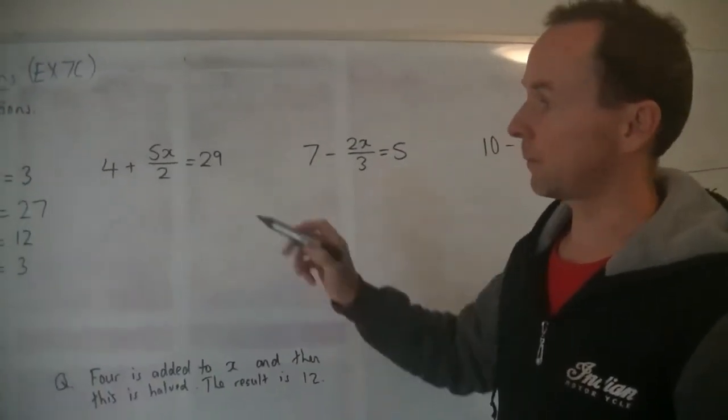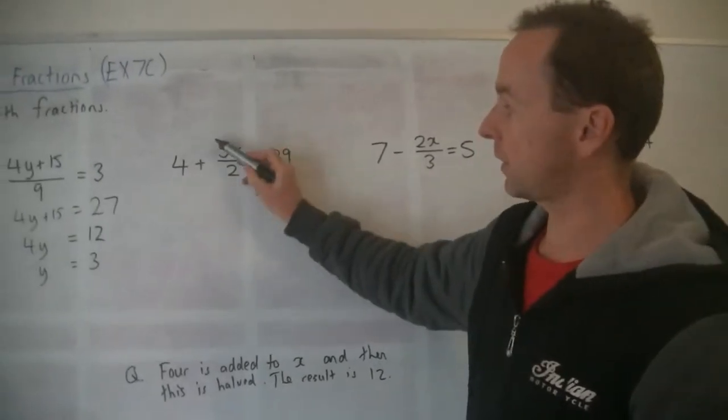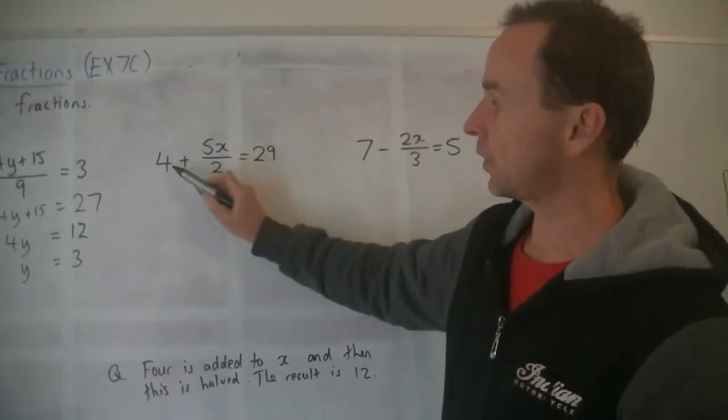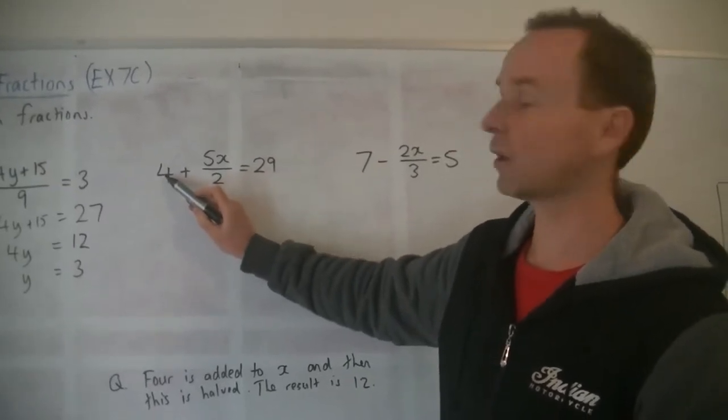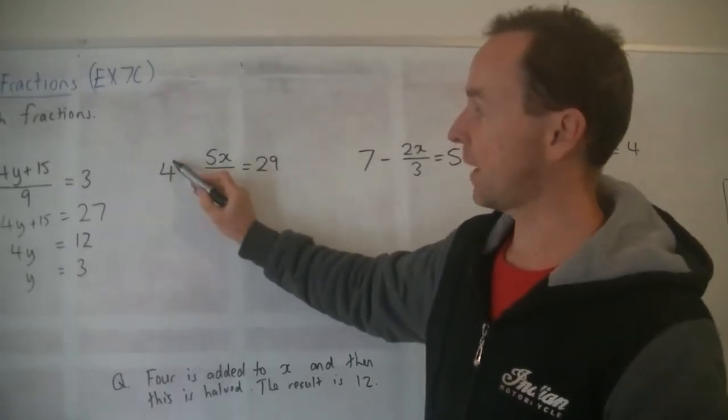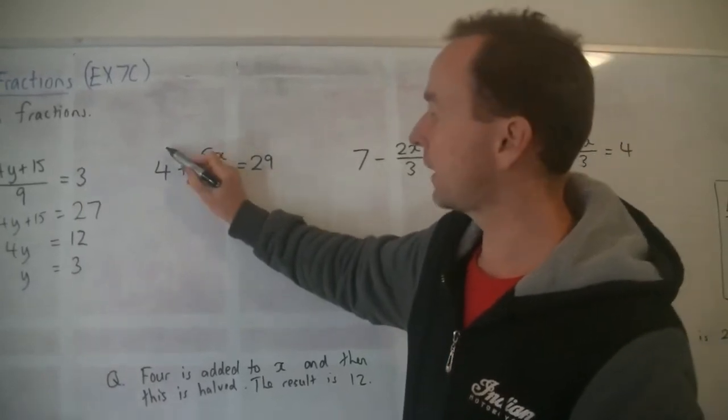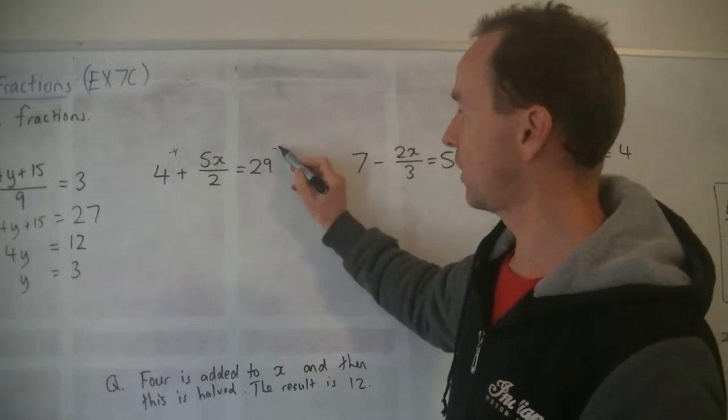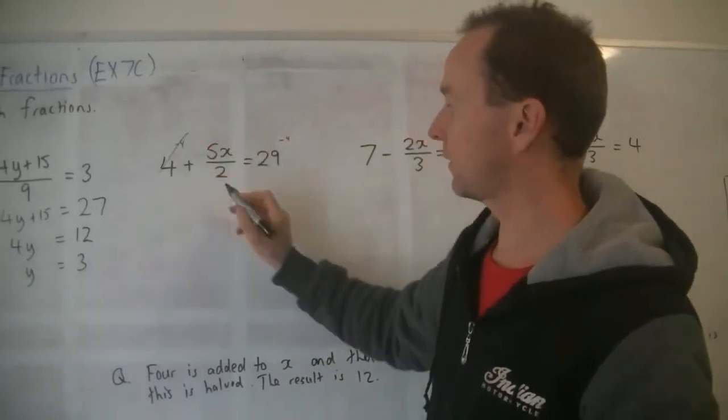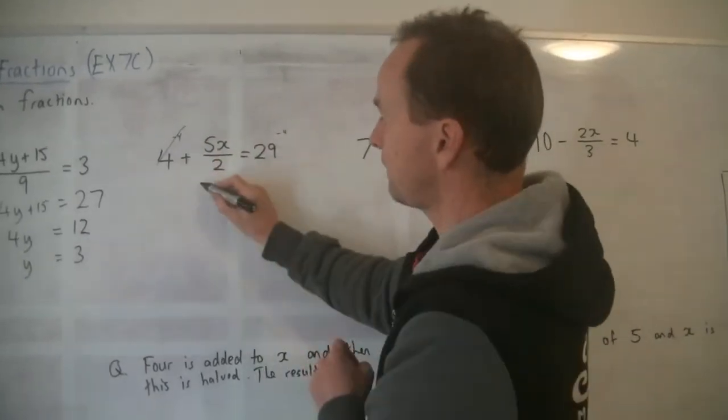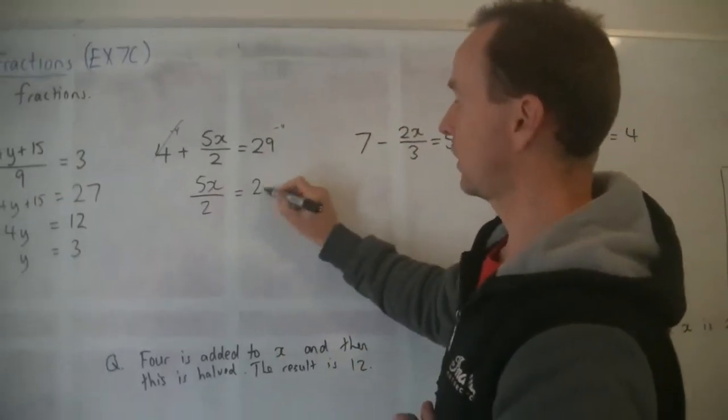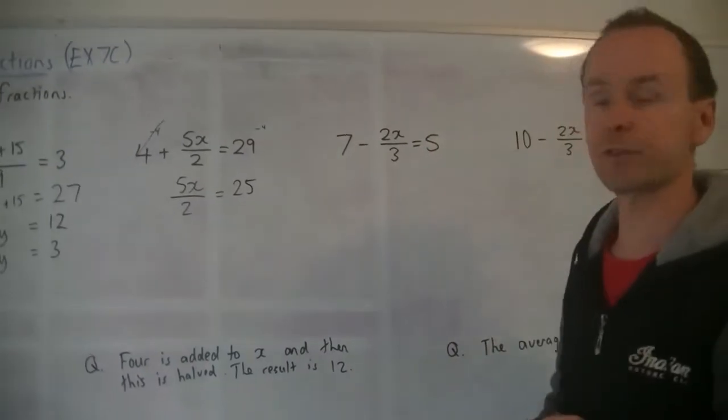Now this one's a little bit different to the last one. So this time you've got the unknown there, the pronumeral, in this little fraction. But you've got a plus 4, plus 4 just added on to the end like that. And this is a plus 4. How do we get rid of plus 4? We minus 4 to both sides. So if you want to write workings out, minus 4, minus 4, and they all cancel. So all we're left with now is 5x divided by 2 is equal to 29 minus 4, which is 25. That's our first step.